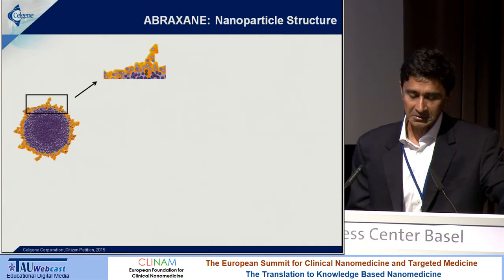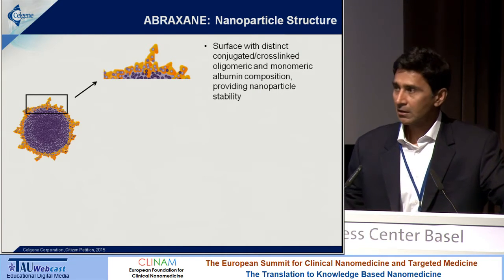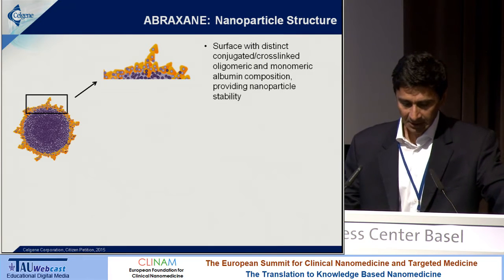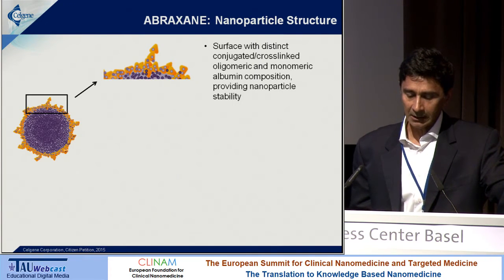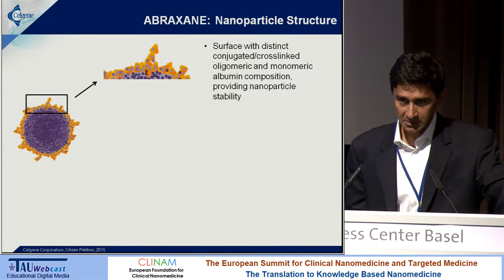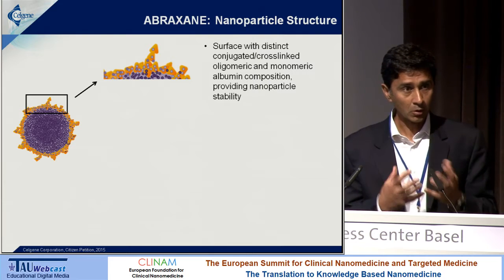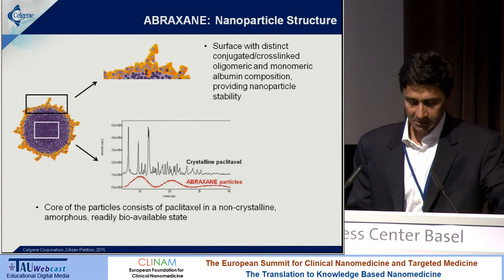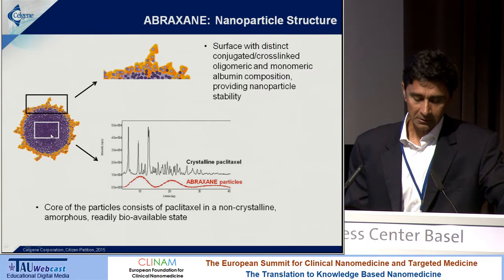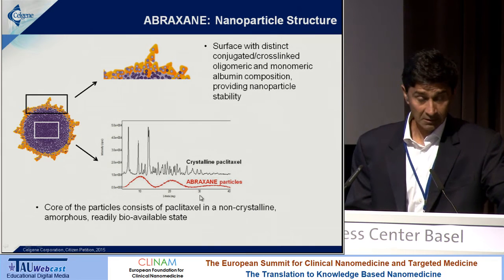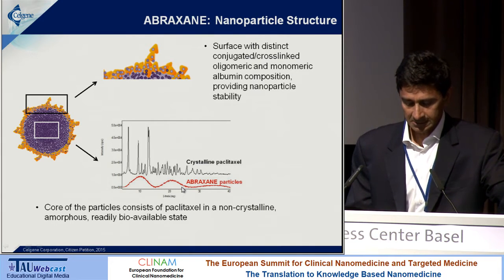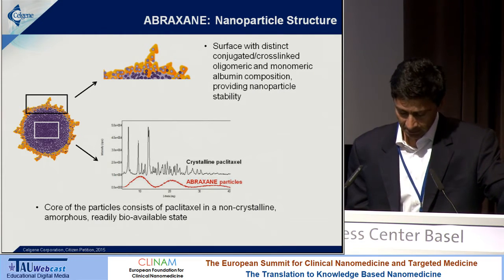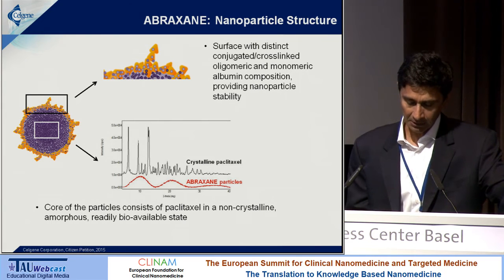Looking at the structure, there's clearly the surface, and as one of the earlier talks mentioned from the EMA reflection papers, the surface coating is important. The albumin is cross-linked into specific and distinct forms, and that may help hold the nanoparticles together and provide some stability. The core is paclitaxel — conventional paclitaxel is crystalline — but within the nanoparticle, the manufacturing process does not create crystalline paclitaxel; it creates amorphous paclitaxel, and as a result these particles can dissolve very quickly. It's in a readily bioavailable state, so it can bind albumin and affect the transport.